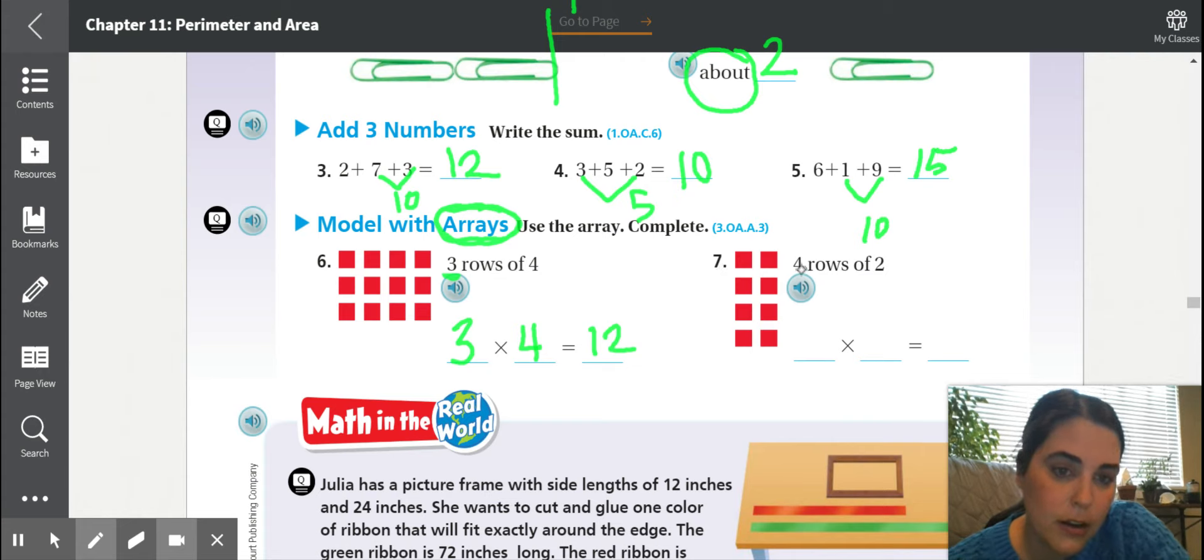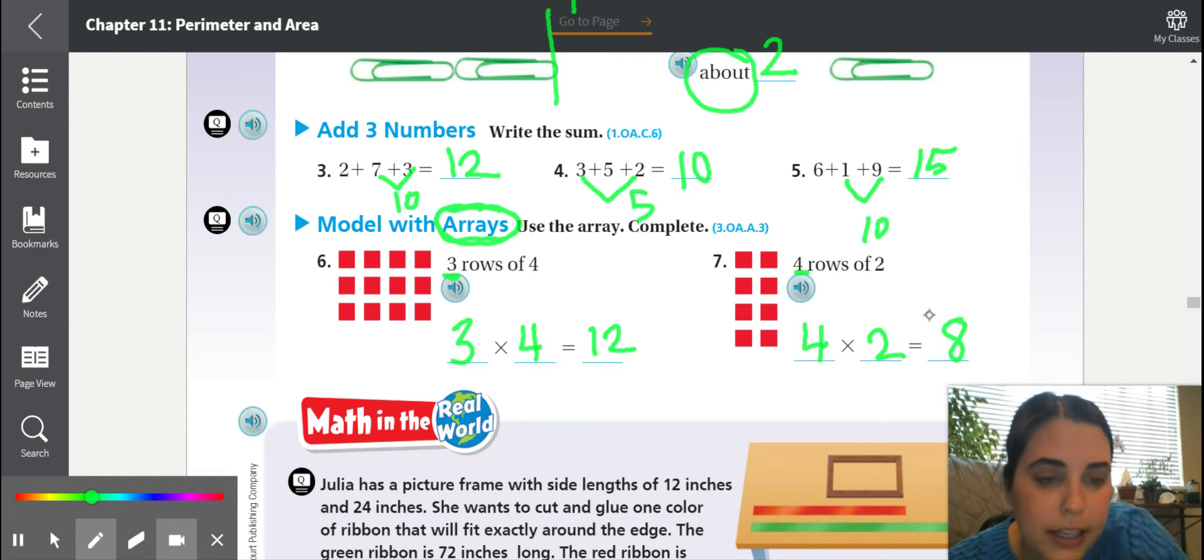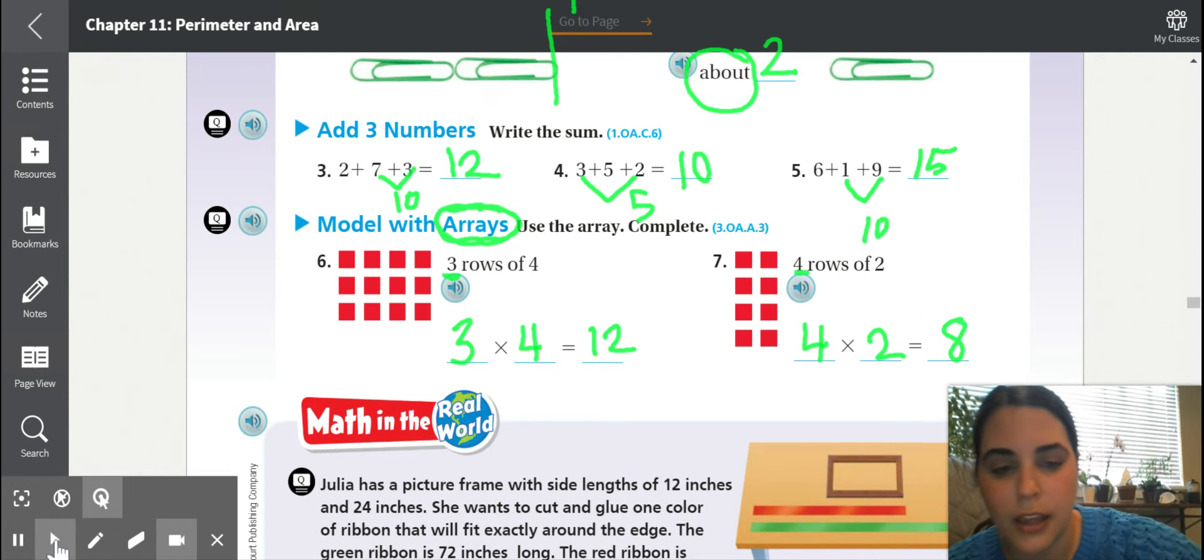Number seven, four rows of two. The four comes from the rows. One, two, three, four. The two comes from how many are in each row. We know the answer is eight. Moving on.